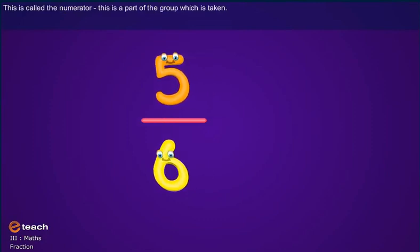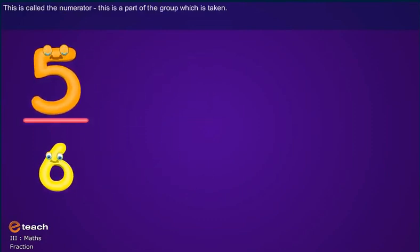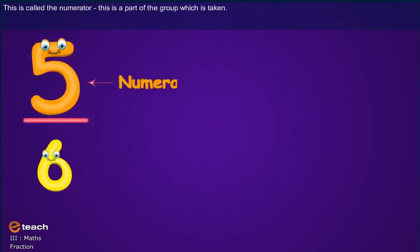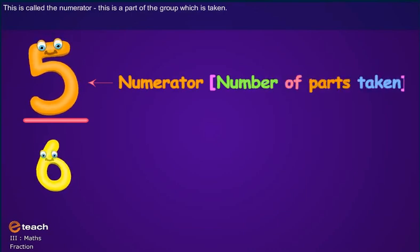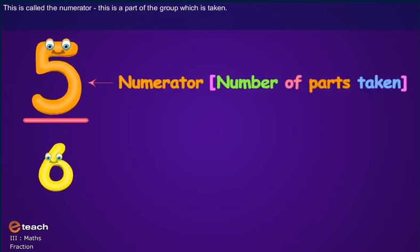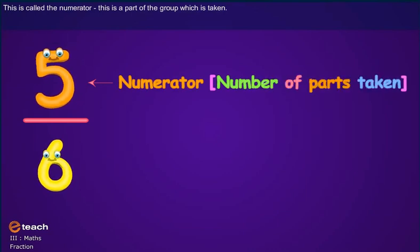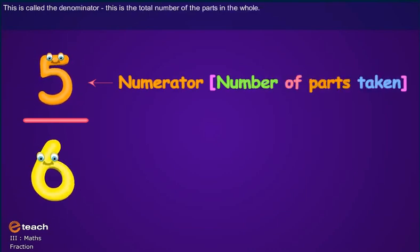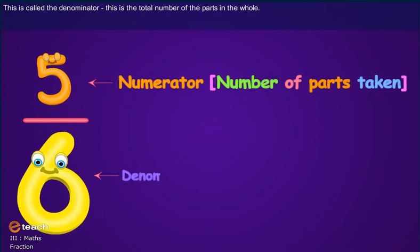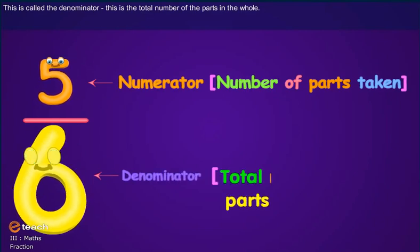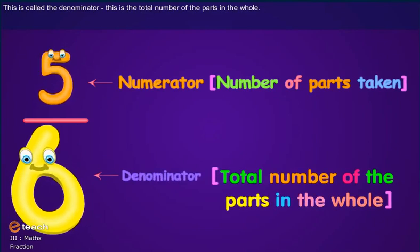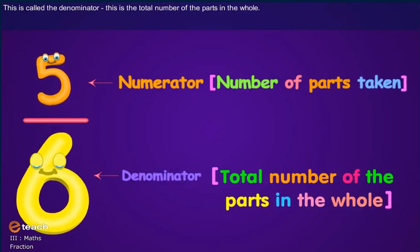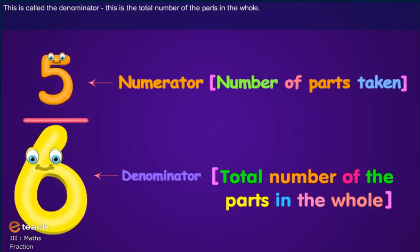This is called the numerator. It is the part of a group which is taken. This is called the denominator, which represents the total number of parts of the whole.